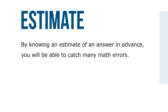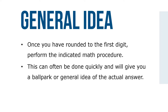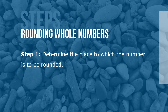By knowing an estimate of the answer in advance, you'll be able to catch many math errors. When using estimation to pre-work a problem, you'll generally round off to the first, the leftmost digit, which is called rounding all the way. Once you've rounded to the first digit, perform the indicated math procedure. This can often be done quickly and give you a ballpark or general idea of the actual answer. Here are the steps for rounding whole numbers to a specified place value. Step 1: Determine the place to which the number is to be rounded.